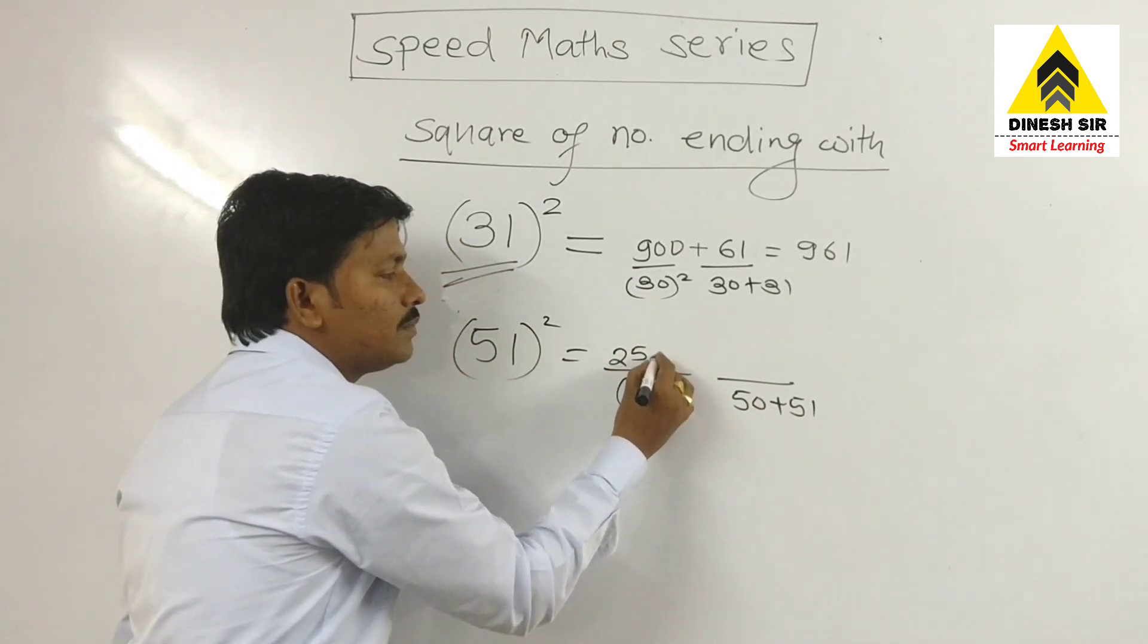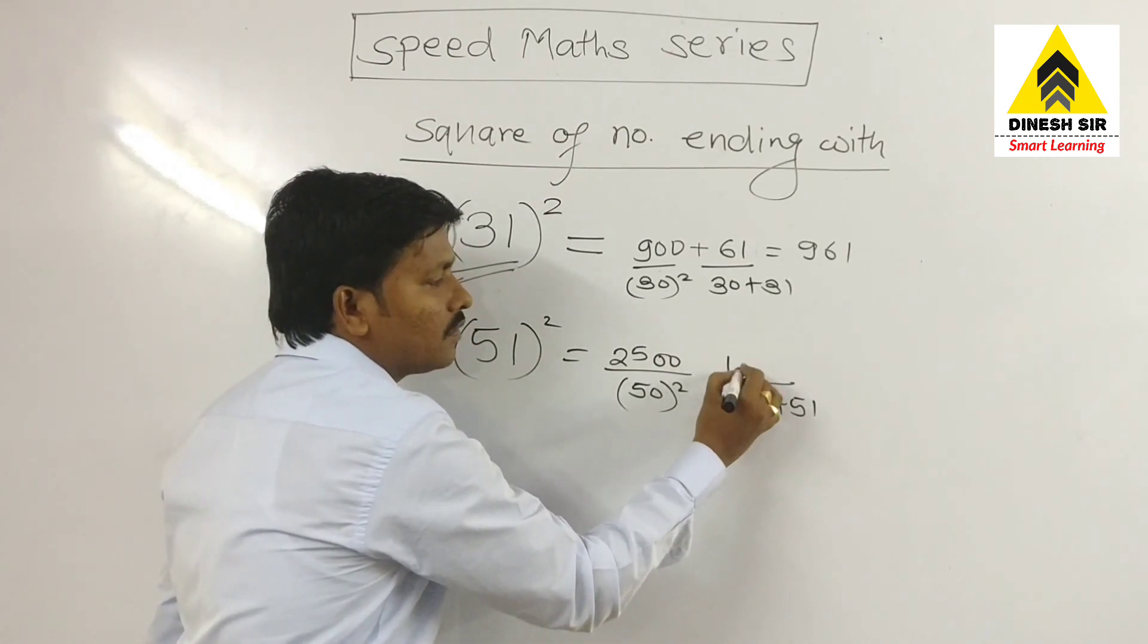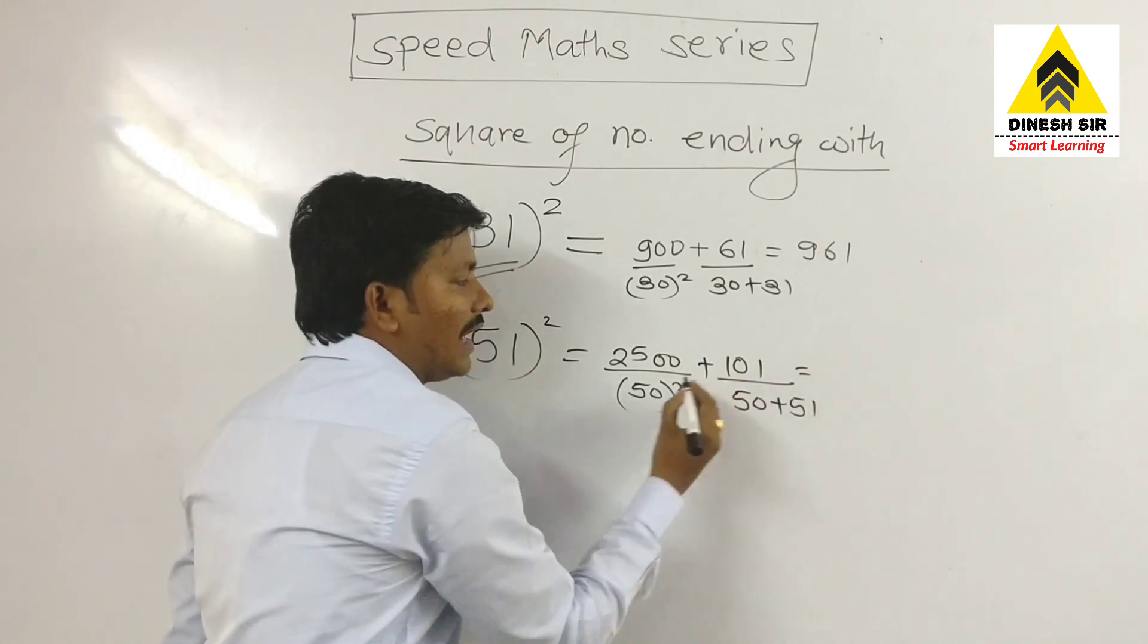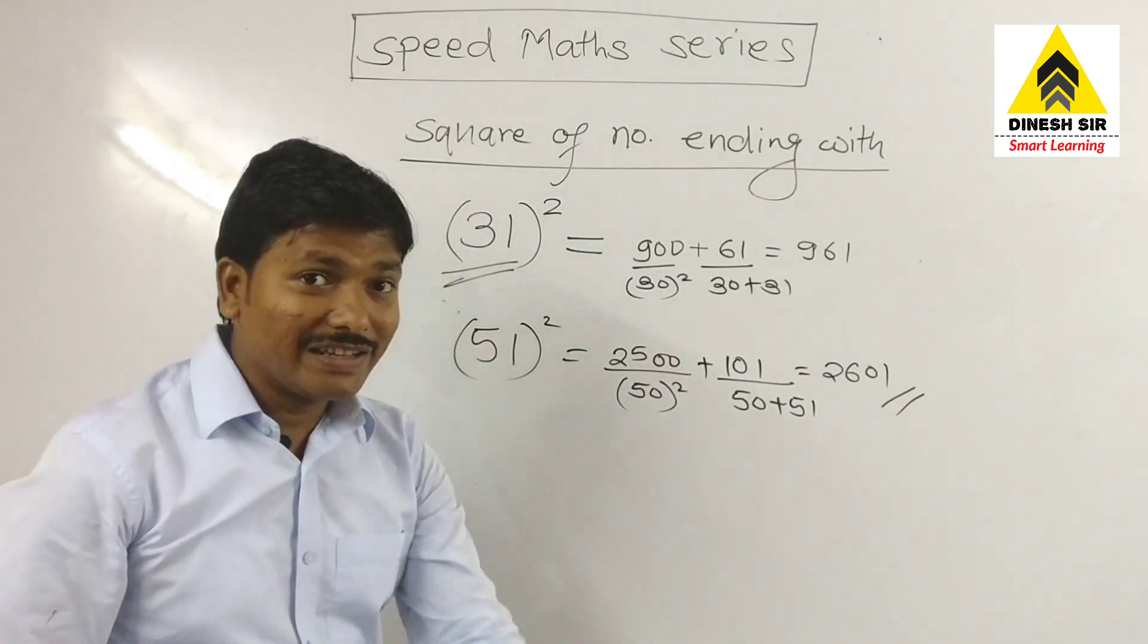Now fifty square: five square is twenty-five, one single becomes double zero, and fifty and fifty-one becomes one zero one. Now we have to add both the values, you get two six zero one.